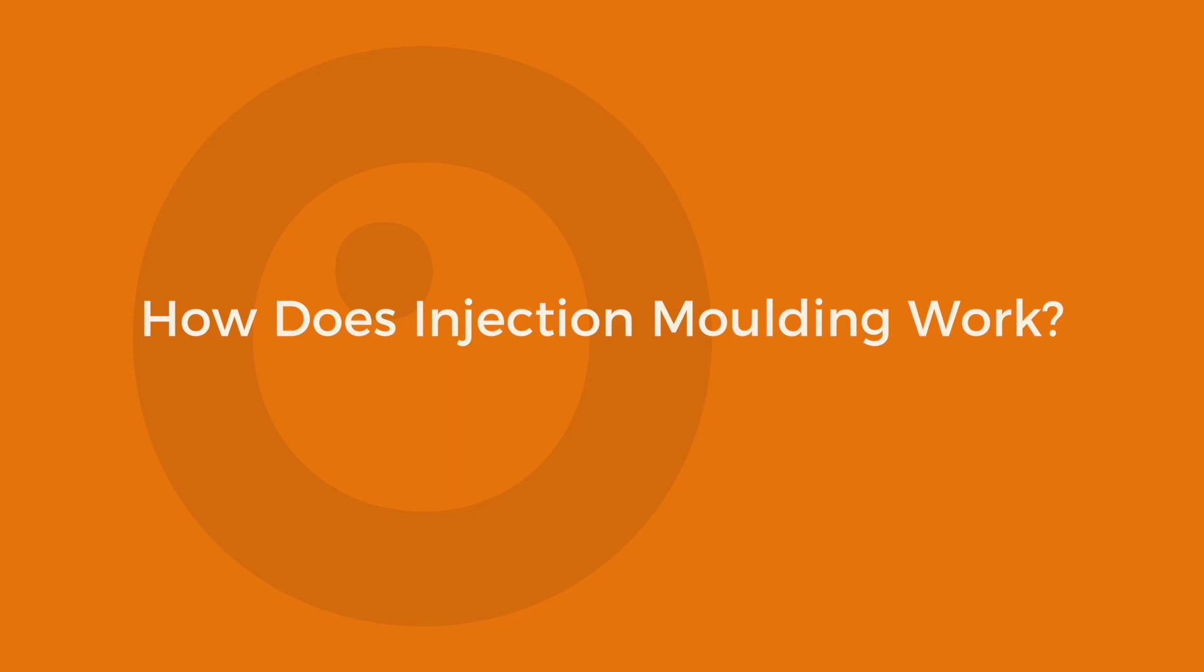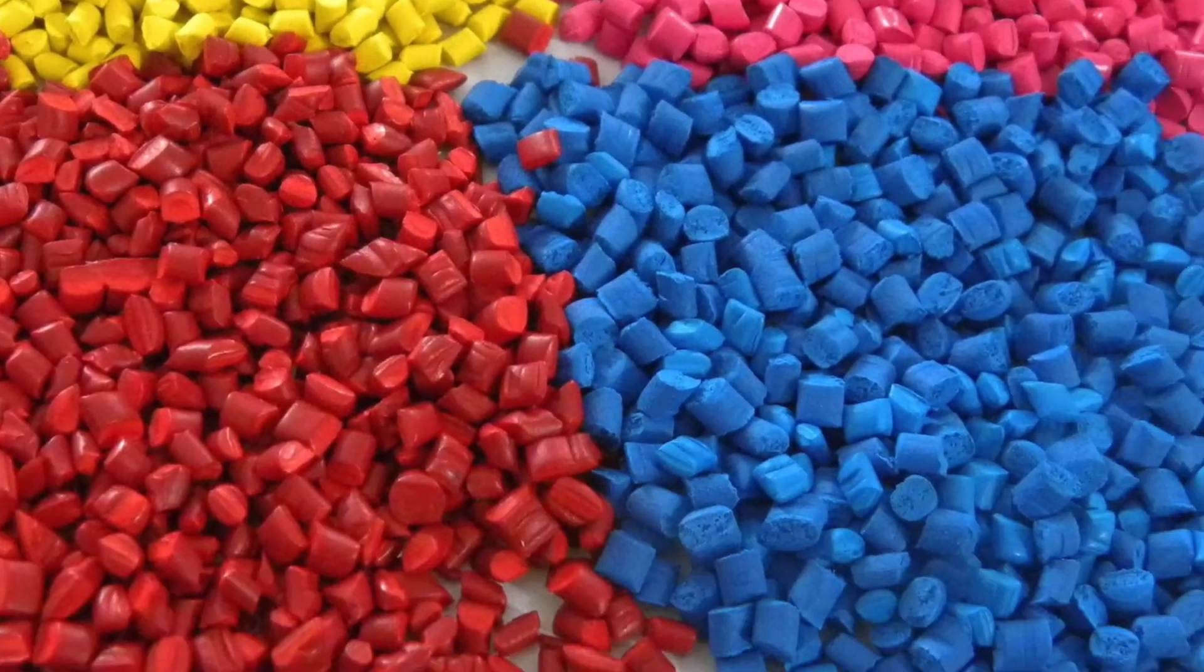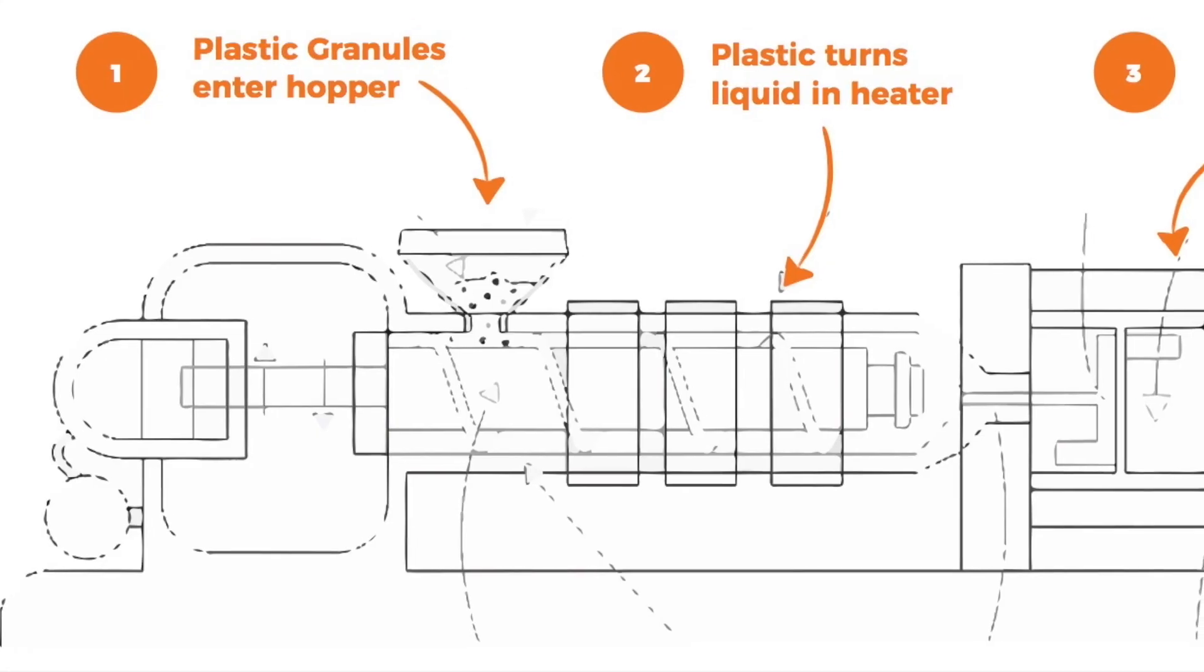But how does injection moulding work? First, small plastic granules enter the machine in a high-temperature compartment which turns them into a liquid substance.